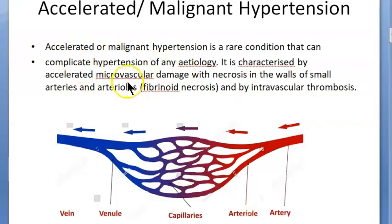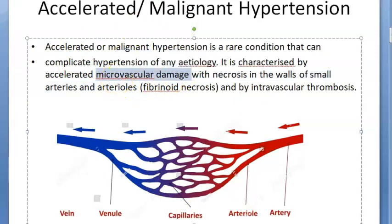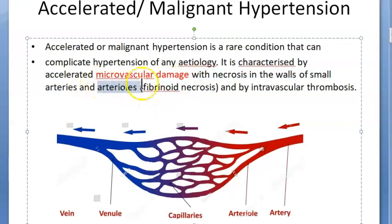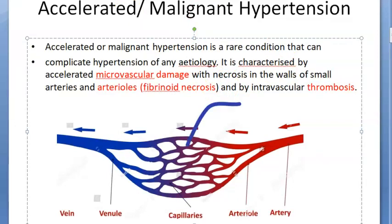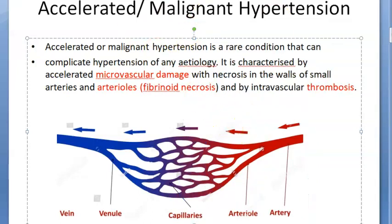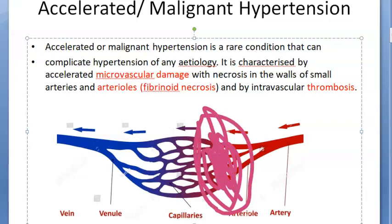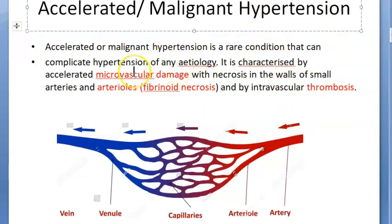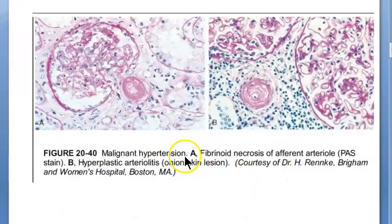Now let's understand the pathogenesis — what is happening exactly. The arterioles are affected and microvascular damage is occurring. The key term to write is fibrinoid necrosis — necrosis in the walls of small arteries and arterioles. This is called fibrinoid necrosis and it can lead to intravascular thrombosis. So in malignant hypertension there is microvascular damage with fibrinoid necrosis.